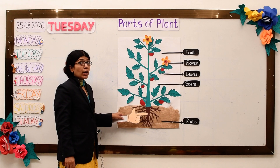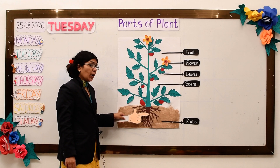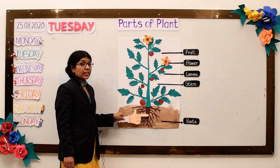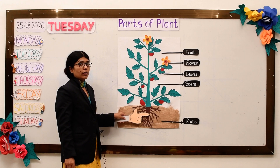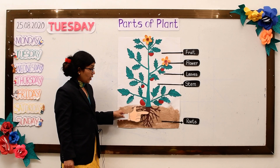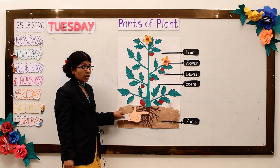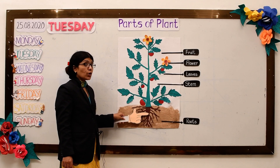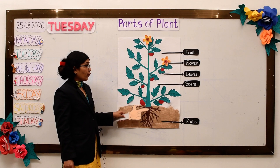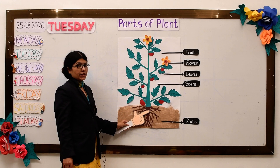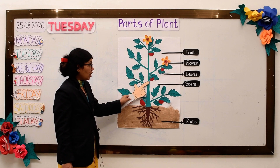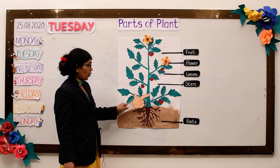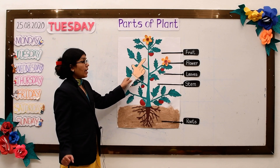Roots usually grow under the ground. They hold the plant in the soil. They also take water and food from the soil, and they store food for the plant.